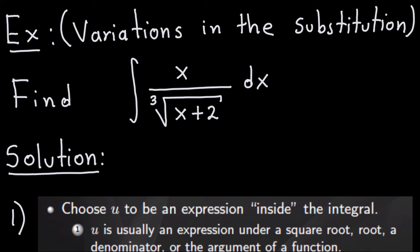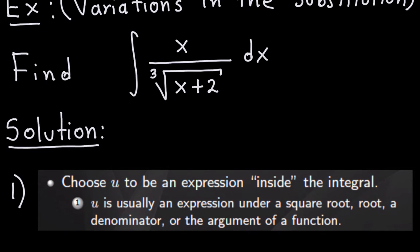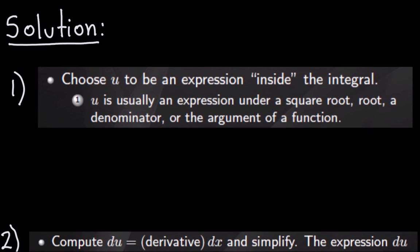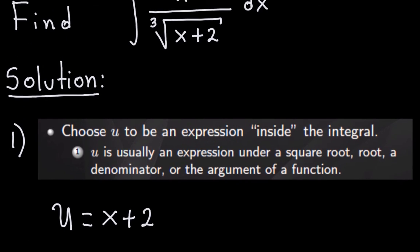This is another example on substitution, but it is a variation of the substitution method — meaning this is not going to be off by a constant and the substitution won't be perfect. But we can still do the substitution and express everything in terms of the variable u. So let's look at this example. We want to integrate this fraction: the numerator is x and the denominator is the cubic root of x plus 2, all dx. As you might guess, in this case u is going to be the expression under the cubic root. So I'm going to call u equals x plus 2.